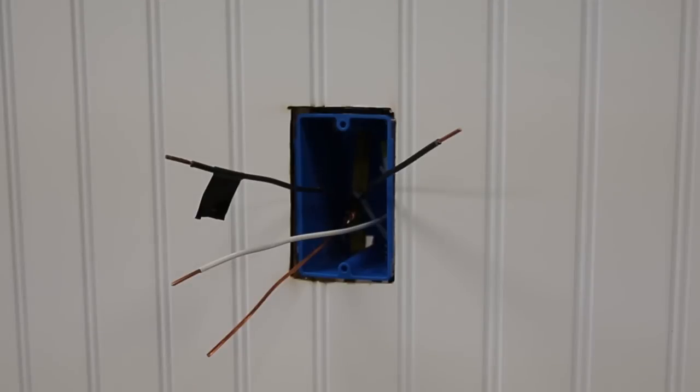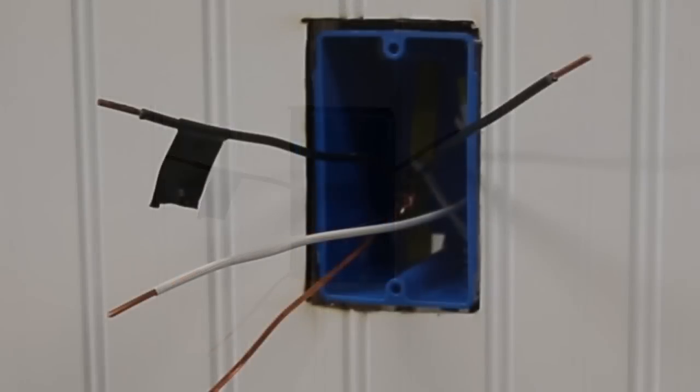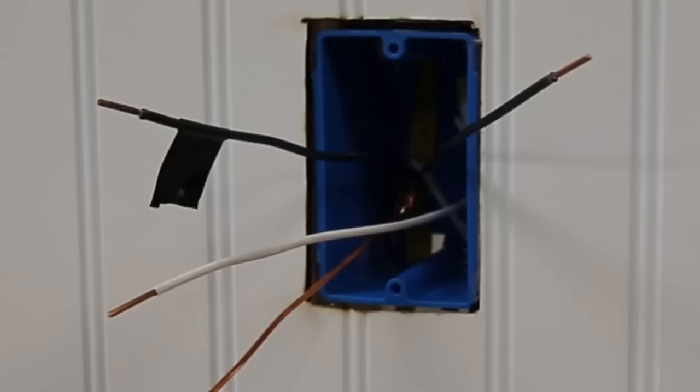We will begin with a single-pole application. Please note that in this example, there is a black hot line wire, a black load wire, two white neutral wires, and a bare copper wire which is the ground. Keep in mind the colors of these wires can vary.